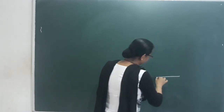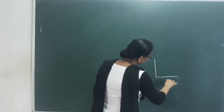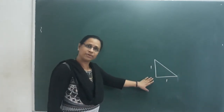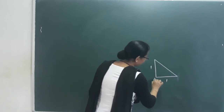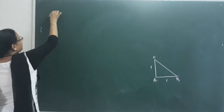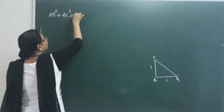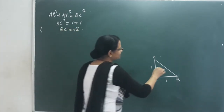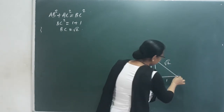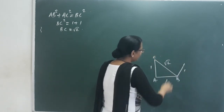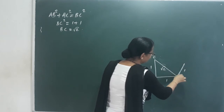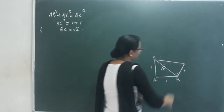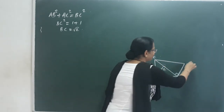We start with a right isosceles triangle in the middle with 1 cm sides. This is triangle ABC. By the Pythagorean theorem, AB² + AC² = BC², so BC² = 1 + 1, giving BC = √2. Then using BC = √2 as one side and adding a perpendicular of 1 cm, we get point D. This length is √2 and the new segment is 1 cm.